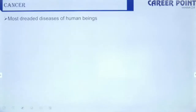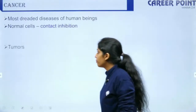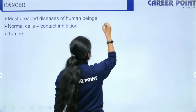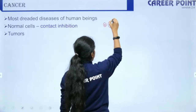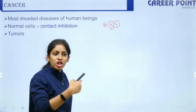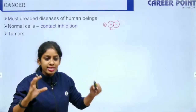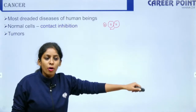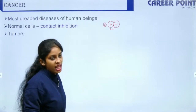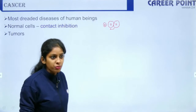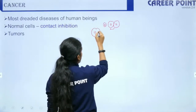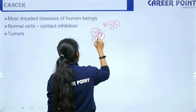Cancer cells lack contact inhibition — normal cells stop growing when they touch neighboring cells, but cancer cells keep growing uncontrollably, one over the other. This results in uncontrolled growth of cells, which can lead to tumors.